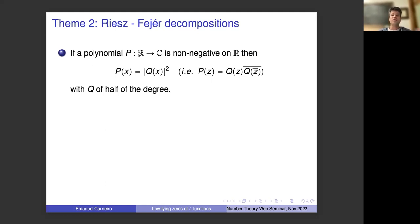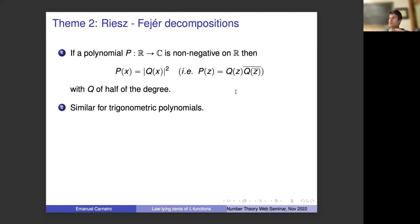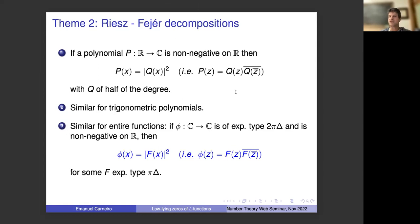The second theme is the Riesz-Fejér decomposition. In many instances in analysis, you have a non-negative object and you want to say it is a square. For polynomials: if a real-coefficient polynomial is non-negative on R, it is the square of another polynomial of half the degree. The same holds for trigonometric polynomials. And the same theorem holds for entire functions of exponential type: if phi has exponential type 2 pi delta and is non-negative on R, then phi equals |F|^2 for F with exponential type pi delta. Every non-negative function of type 2 pi delta is the square of a function of half the exponential type.